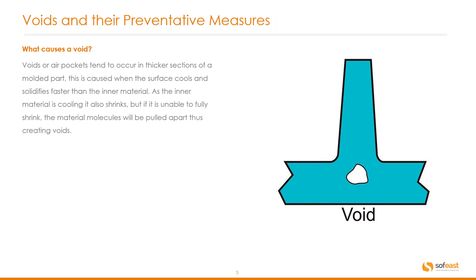Voids. You can see an example on the right hand side here of what a void is. Voids or air pockets tend to occur in thicker sections of a molded part. This is caused when the surface cools and solidifies faster than the inner material. As the inner material is cooling, it also shrinks. But if it is unable to fully shrink, the material molecules will be pulled apart, thus creating voids.